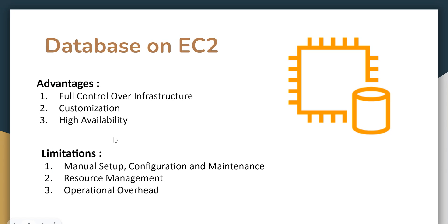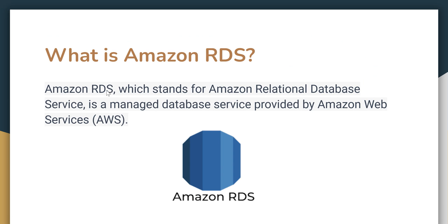To fix these limitations, AWS came up with a managed database service called RDS. RDS is a Relational Database Service where all the infrastructure, security, licensing, and scalability are managed by AWS. You just go to your AWS account, open the RDS service, click create database, and it will be ready for use. Everything is managed by AWS in the backend — it's that simple.